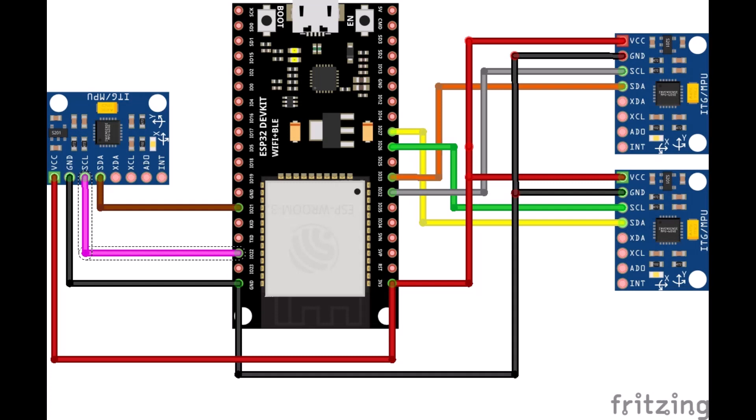Now let's go through the schematics used in this project. We have three MPUs: MPU1 is connected on IO26 and IO27, MPU2 is connected on IO32 and IO33, and MPU3 is connected on IO21 and IO22.